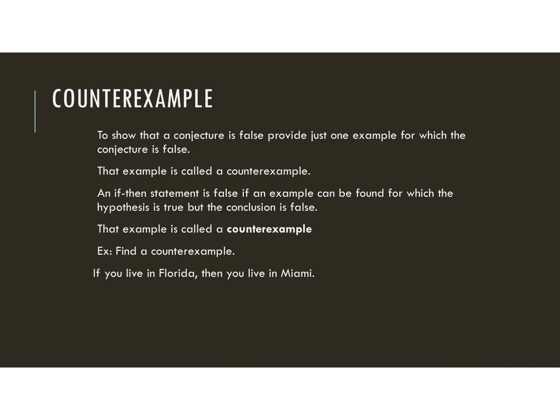The next thing we're going to talk about is a counterexample. To show that a conjecture is false, all you need to do is provide one example showing the conjecture is false. This one example is called a counterexample. An if-then statement is false if you can find an example for which the hypothesis is true but the conclusion is false. That example is called the counterexample.